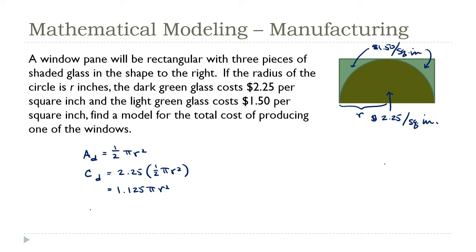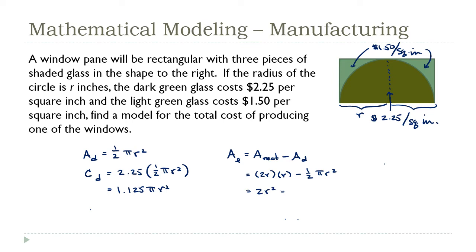The light green section is a slightly more challenging irregular shape, but I can find its area, A_l, using a basic geometry technique: take the area of the total rectangle and subtract the area of the dark green section. The base of the rectangle is made up of two radii, so it's 2r. The height is also a radius, so the rectangle's area is 2r × r = 2r². Subtracting the semicircle gives 2r² − (1/2)πr².